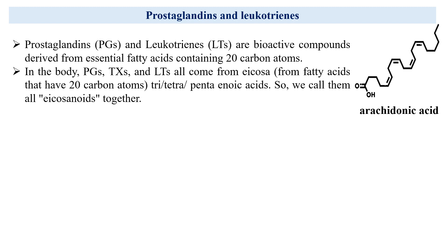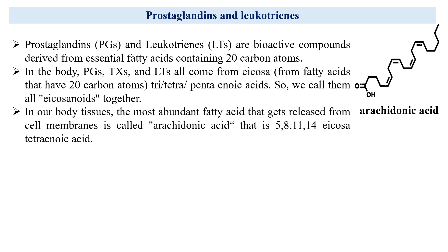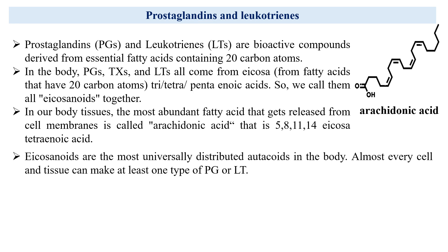We group them together and call them eicosanoids. The most important fatty acid released from our cell walls is arachidonic acid — it is 5,8,11,14-eicosatetraenoic acid. These eicosanoids are like little messengers found everywhere in our body; almost every cell and tissue can create at least one type of prostaglandin or leukotriene.